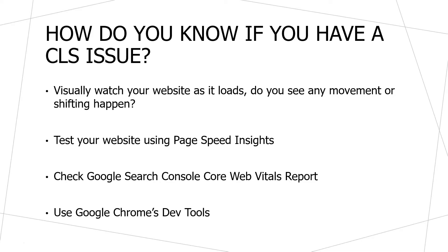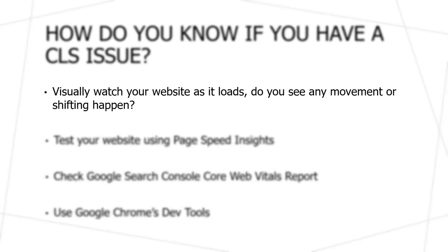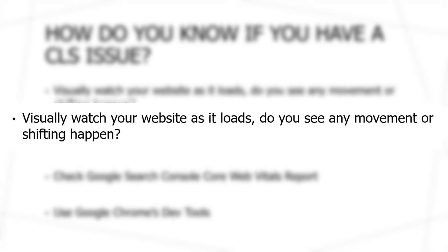Now that we understand the CLS score, how do we know if we have a CLS issue? One of the best ways to tell is to visually watch your website as it loads. Do you see items moving around the page? Do you see some shifting occurring? I would recommend checking this at different connection speeds — sometimes you won't see the shifting on a higher connection, but you will see it on a slower connection speed. If you see that shifting occurring, then you know you have a problem to fix.